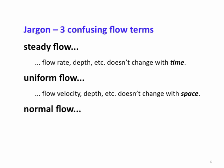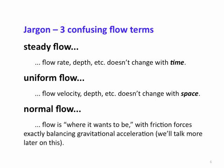Finally, we have normal flow. This is one of those words where we take a common word — 'normal' — and give it a special jargon definition. A normal flow is where the flow wants to be: where the friction forces exactly balance the gravitational acceleration. This is what we consider the normal condition for the flow.